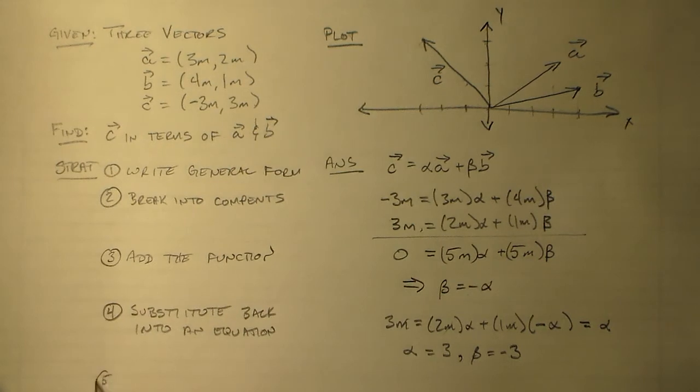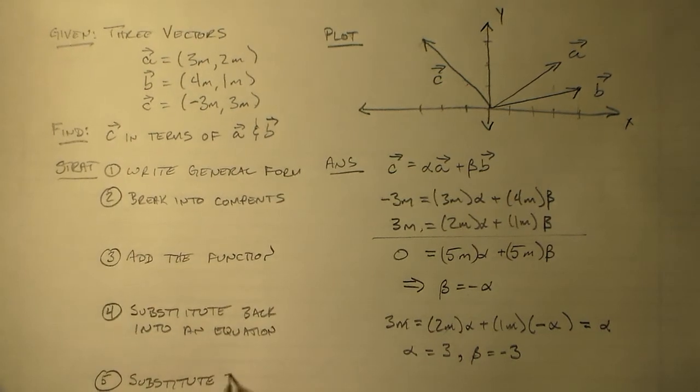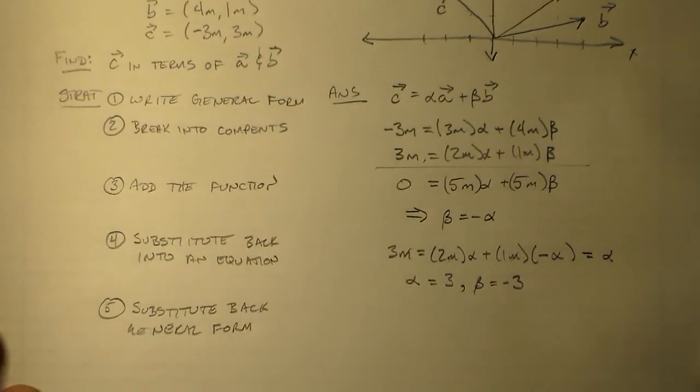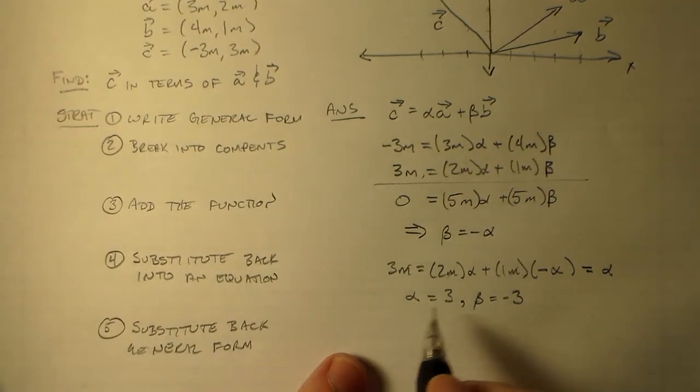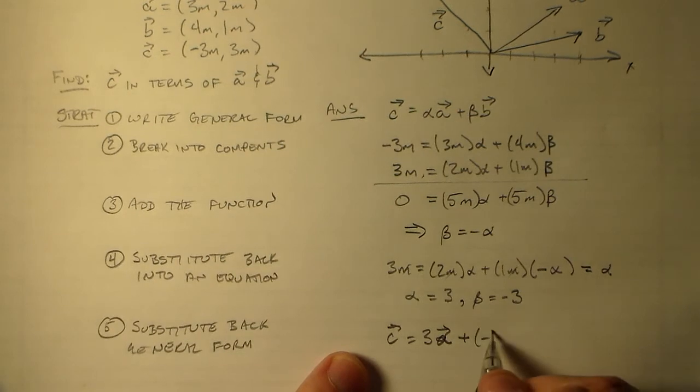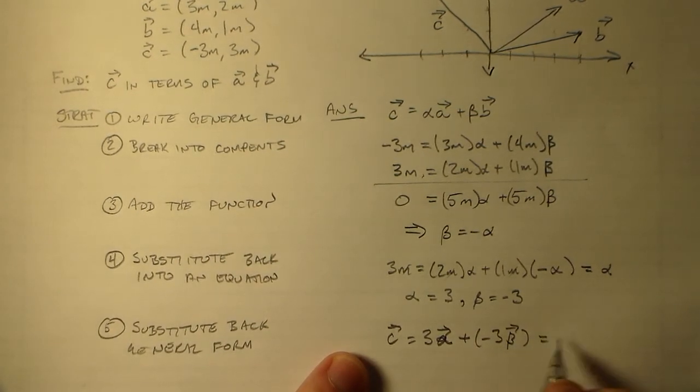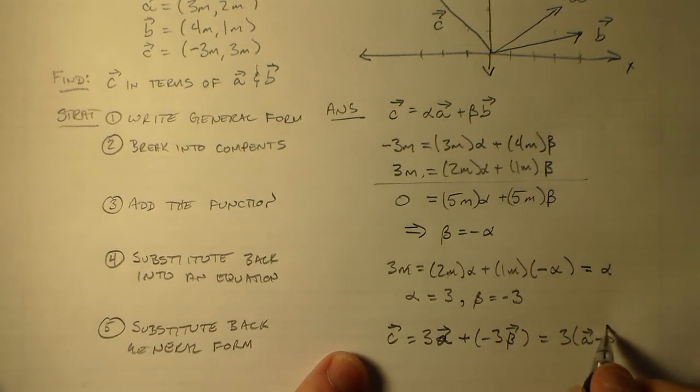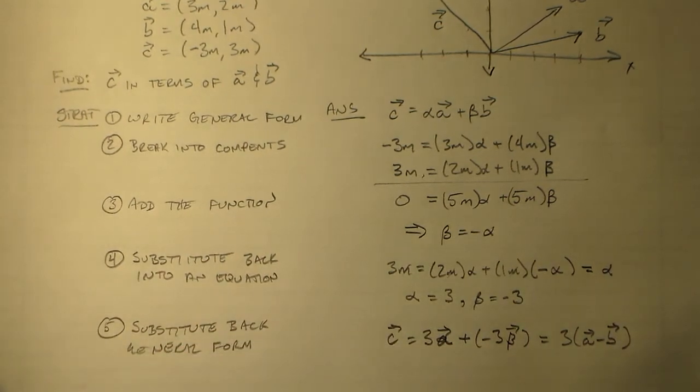So that means I can put all these together so I can substitute back into the general form now. Okay, let's let you see that. Okay, so that means I take C is equal to this alpha times A, so that's 3 times A, plus this minus 3 times beta, plus minus 3 times B. And that's equal to 3 times A minus B, which is exactly what we had last time.